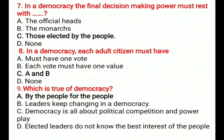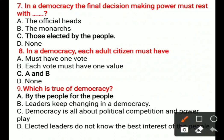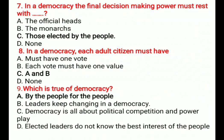Question 7: In a democracy, the final decision-making power must rest with — A) The official heads, B) The monarchs, C) Those elected by the people, D) None. The correct option is C, those elected by the people.